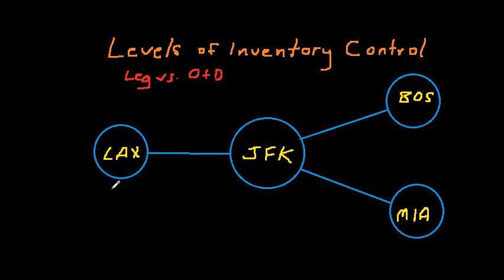However, this airline flies to four cities: Los Angeles, JFK, Boston, and Miami, and we're going to use this little network to illustrate the different types of inventory control.